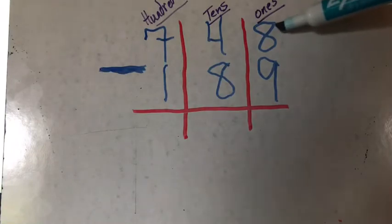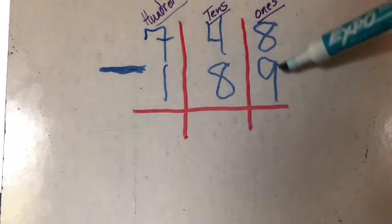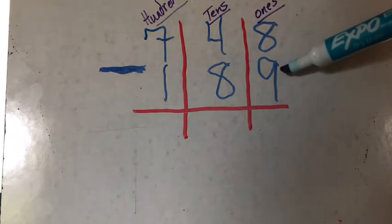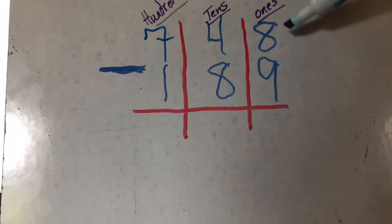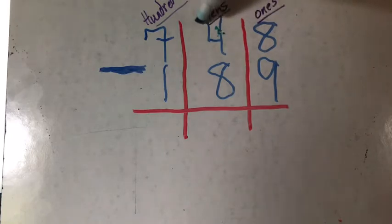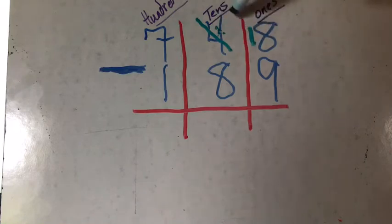I start at the top. I have 8 minus 9. 8 is less than 9. So if I minus this, I'm going to get a negative number. We don't want a negative number in third grade. So he goes and knocks on his next door neighbor's door. He says, hi, can I borrow a cup of sugar? The 4 says, sure, you can have 1. And 4 minus 1 is a 3.